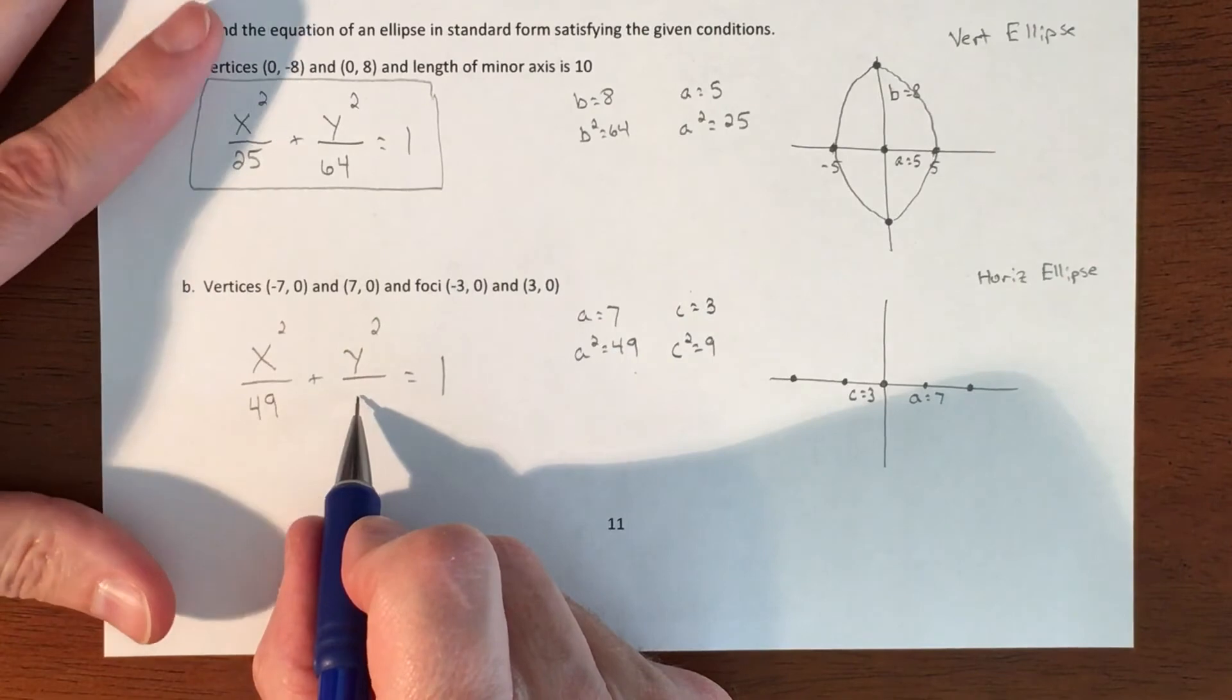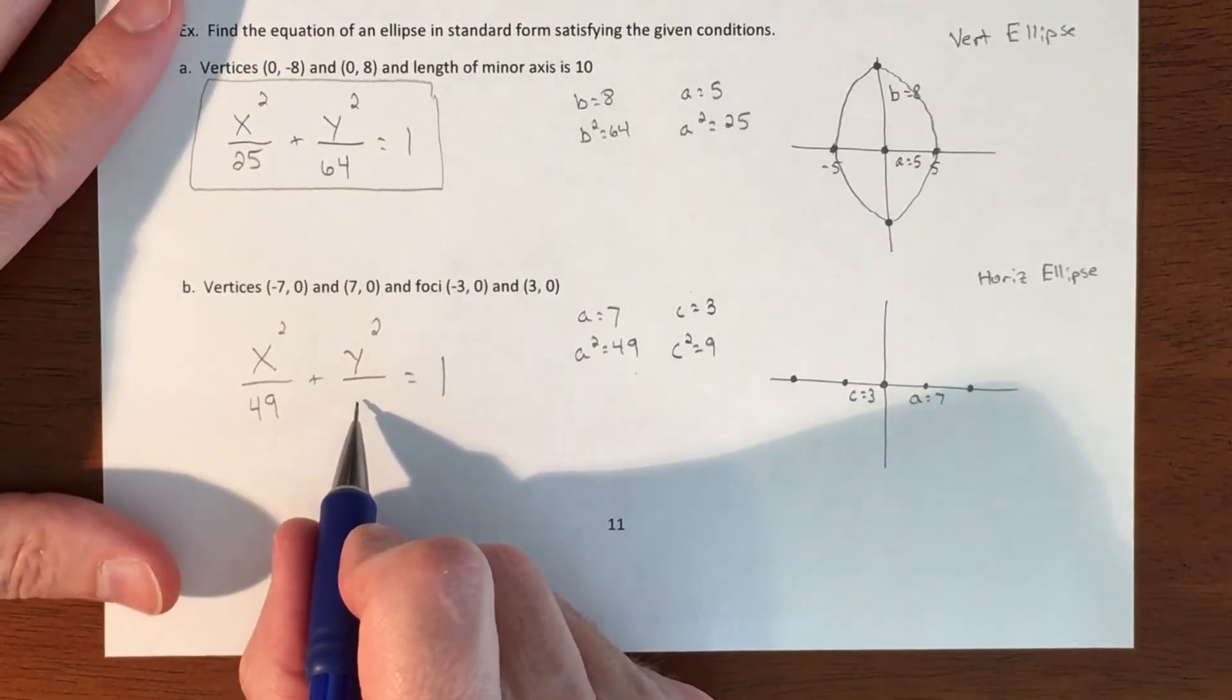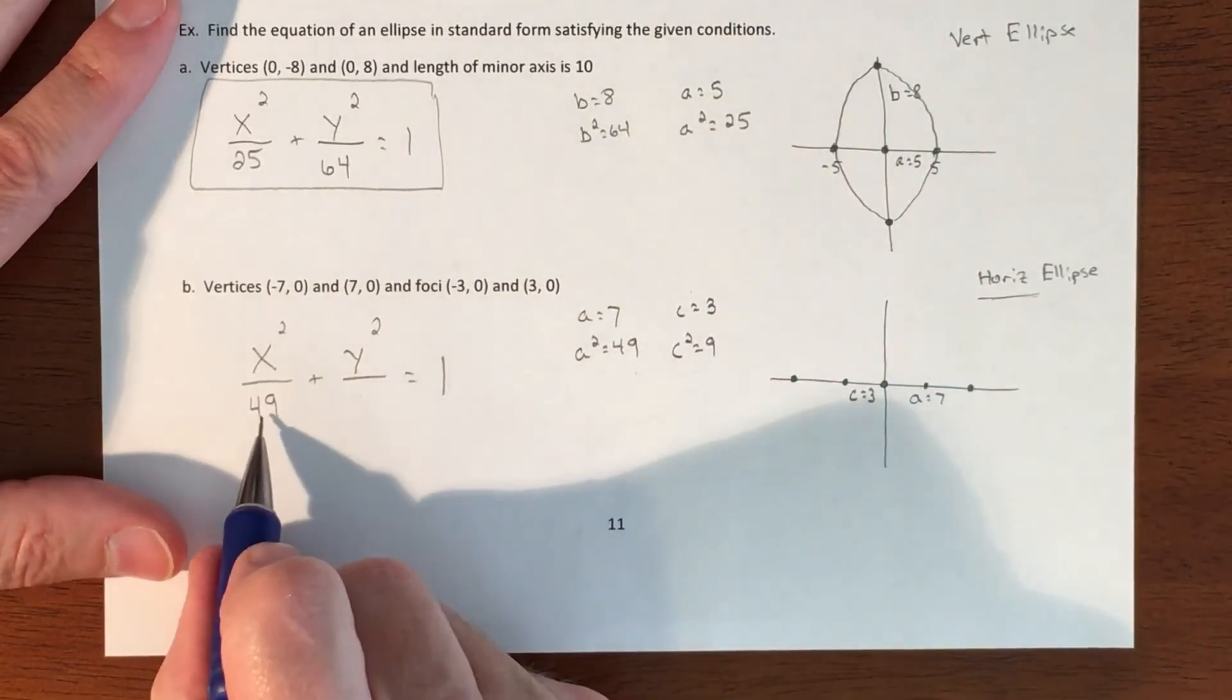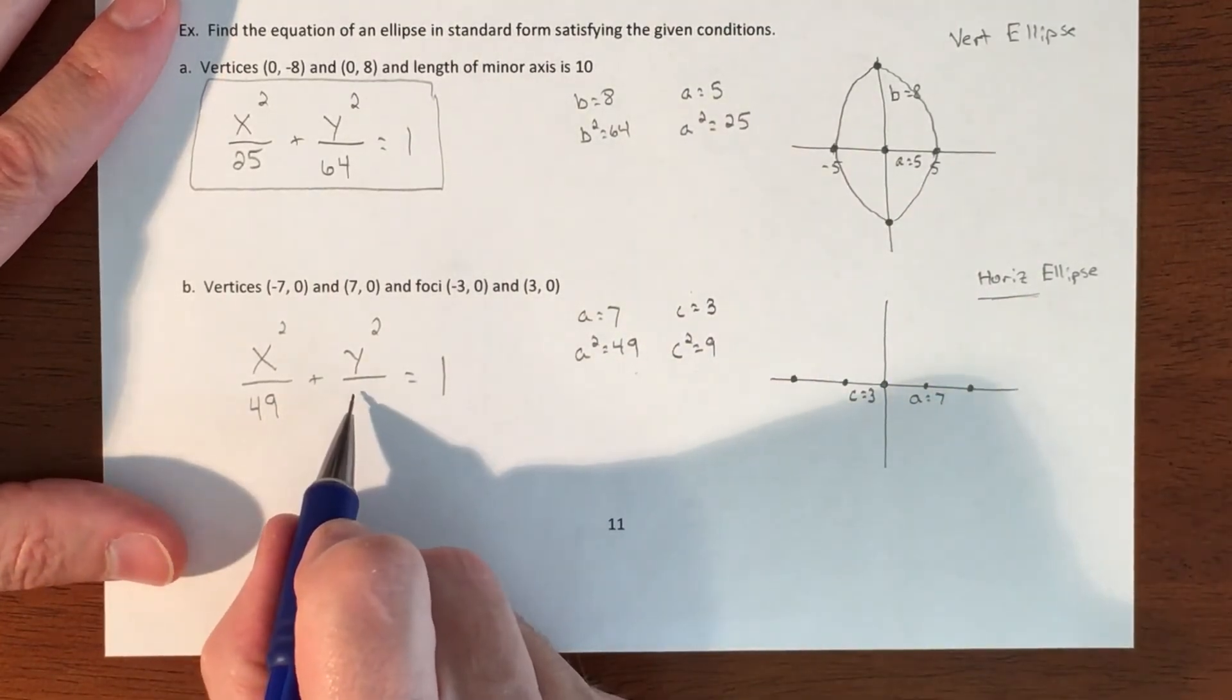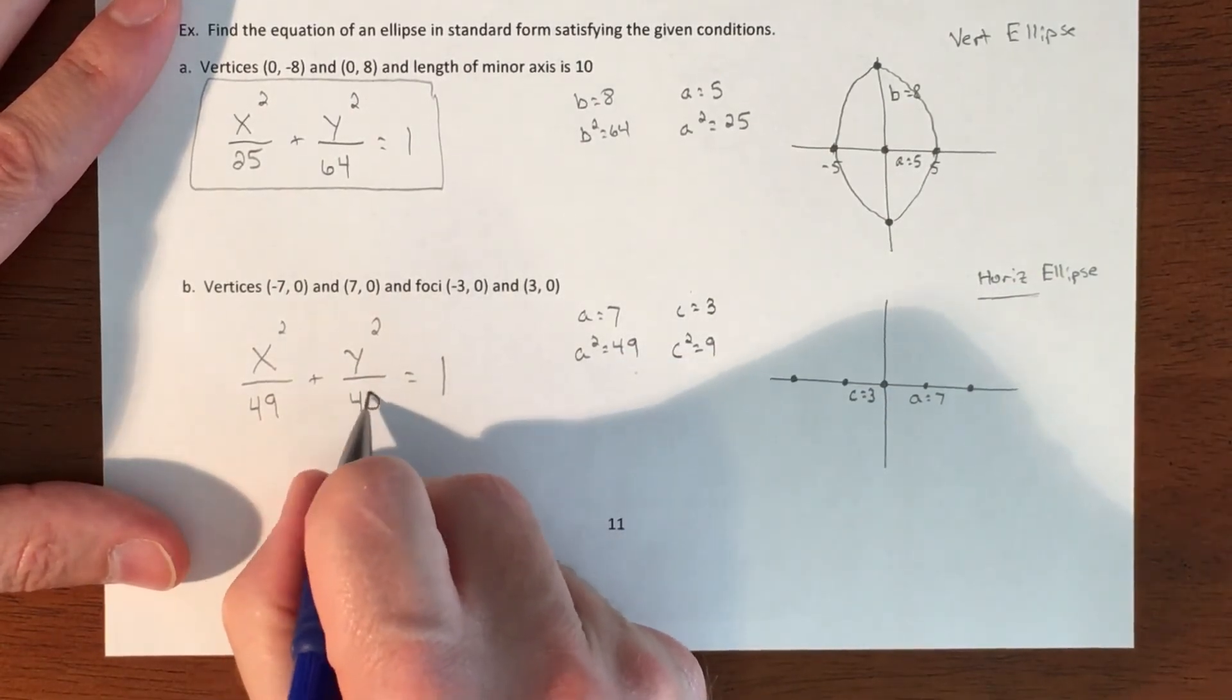So either you go 40 or 58. Since this is a horizontal ellipse, this value has got to be bigger than this value, so this has got to be 40.